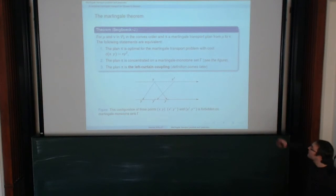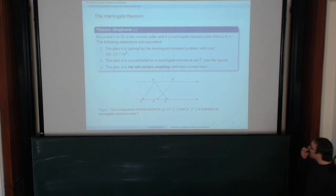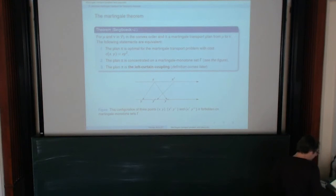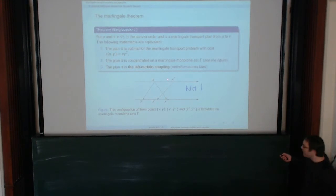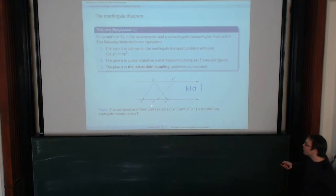This is the parallel statement. Here we don't have x*y; we have x*y². The plan P is concentrated on the Martingale monotone set. The forbidden condition is no longer a crossing — it is something more. The relative positions are: X and X' in this order with X' > X, and Y' strictly between Y_minus and Y_plus. You cannot move X' to Y' when Y' is strictly between Y_minus and Y_plus.